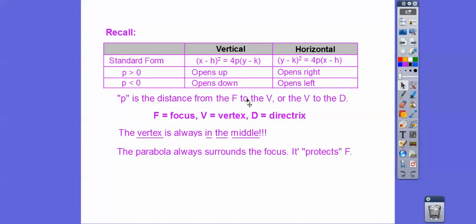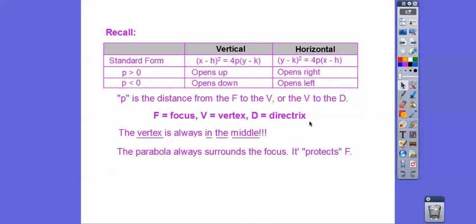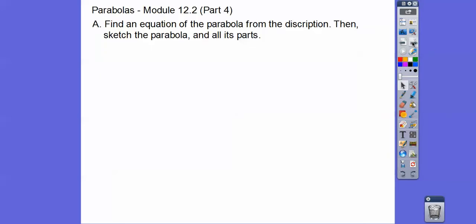Remember, p is the distance between the focus and the vertex, or the vertex and the directrix. Your vertex is always in the middle, and the parabola always surrounds the focus — it's always protecting it. So if you graph them, just get a general graph of them; it really sets up the equation for us.